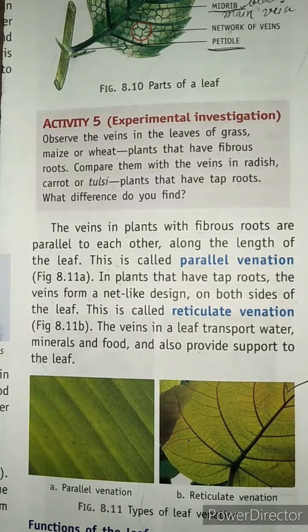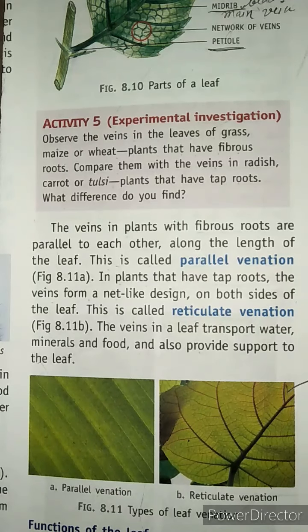Now for an activity: observe the veins in the leaves of grass, maize, or wheat plants that have fibrous roots, and compare them with the veins in leaves of plants that have tap roots.